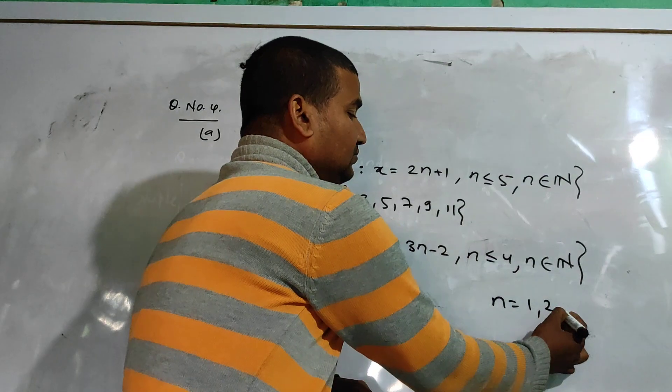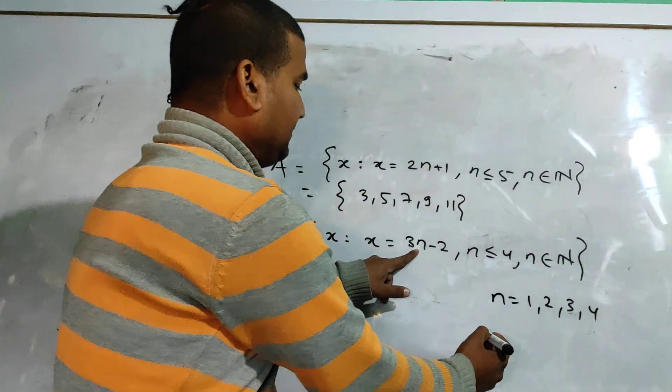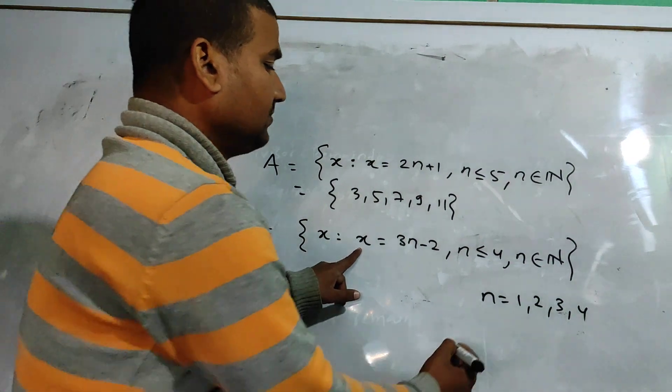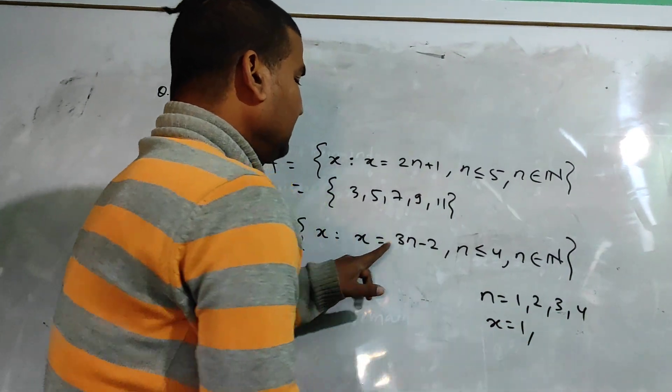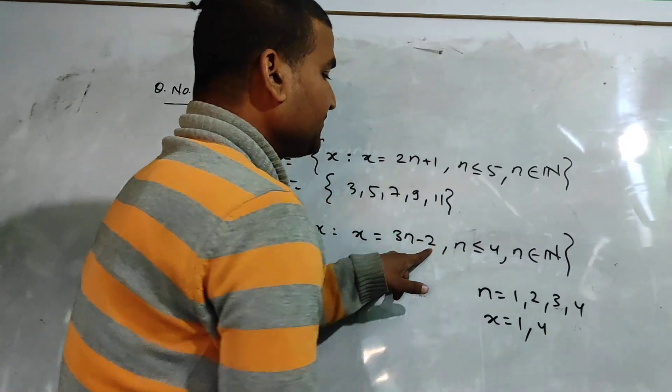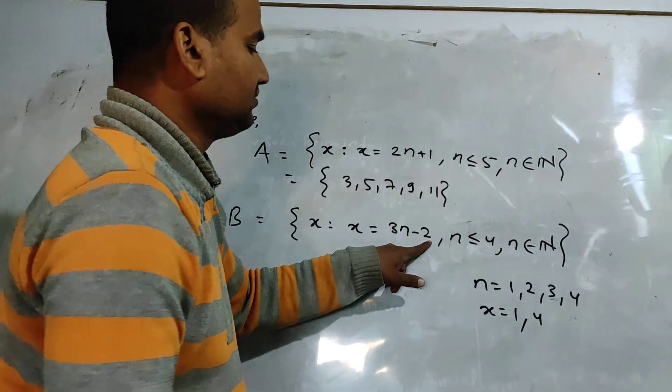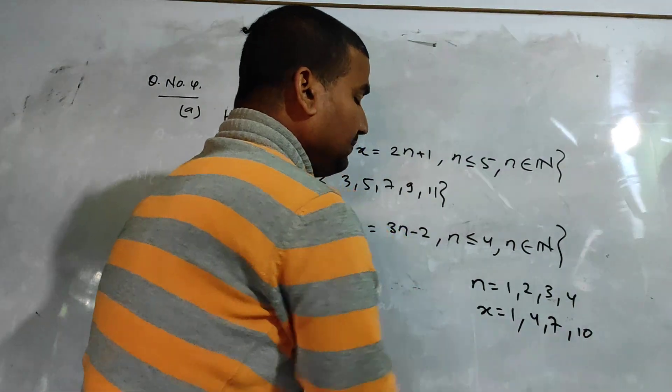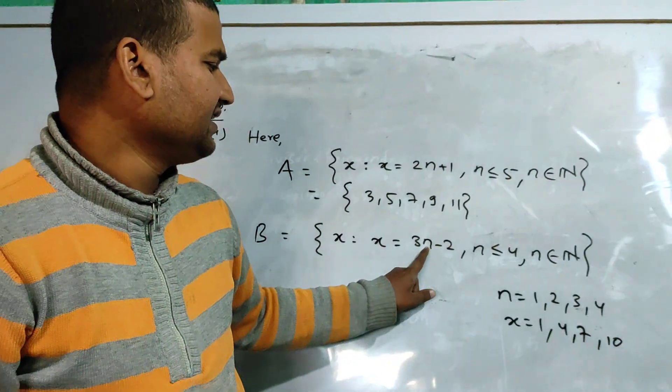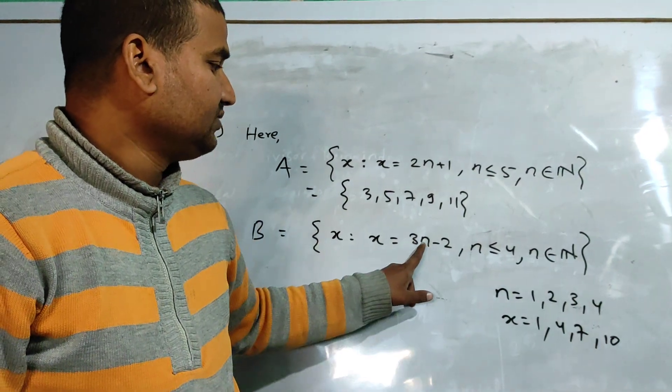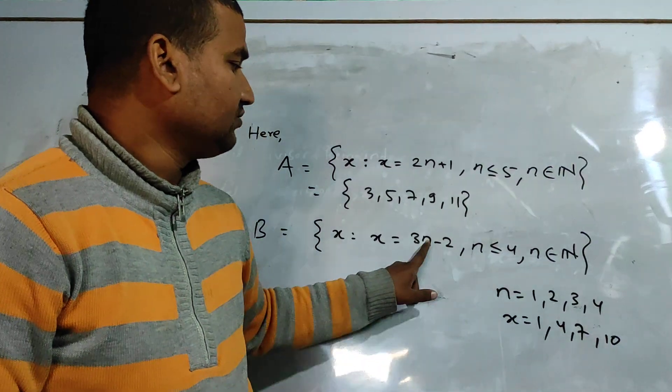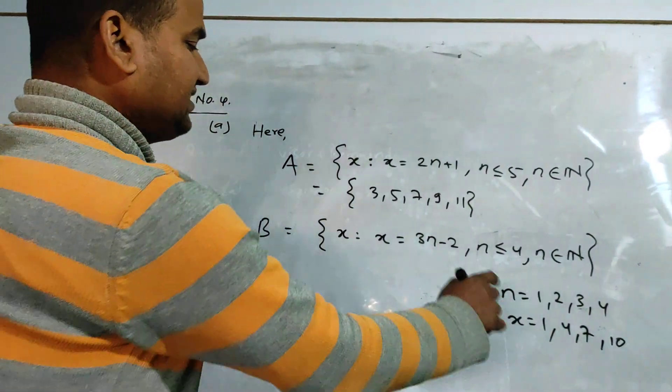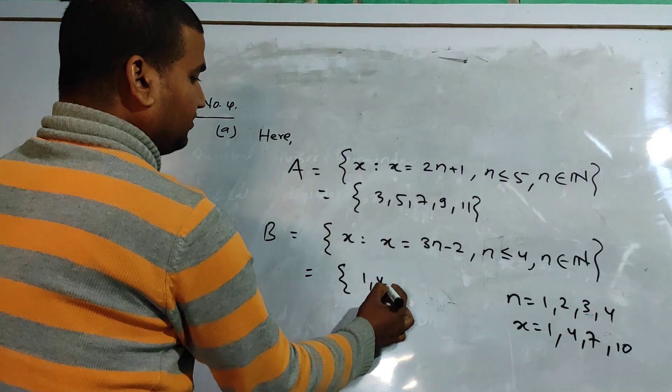Now we have to find the value of x. When n equals 1, x equals 1. When n equals 2, x equals 4. When n equals 3, 3 times 3 is 9 minus 2 gives 7. When n equals 4, 3 times 4 is 12 minus 2 gives 10. So we have n equals 1 gives 1, n equals 2 gives 4, n equals 3 gives 7, n equals 4 gives 10.